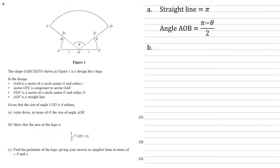For part B, we need to show that the area of the logo is half R squared times three theta plus π. So we know the formula for the area of a sector is half R squared theta.